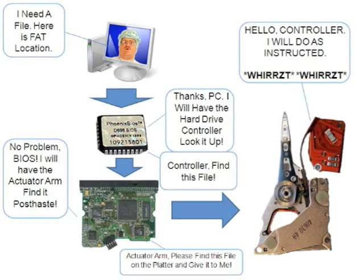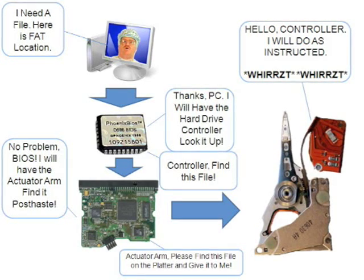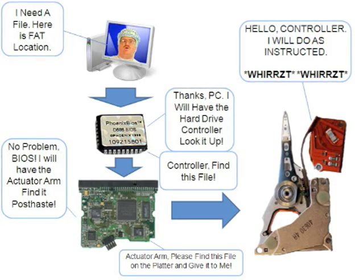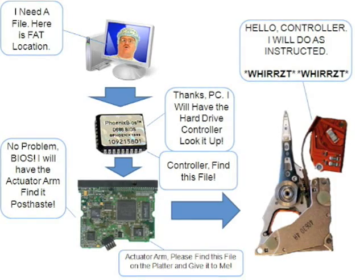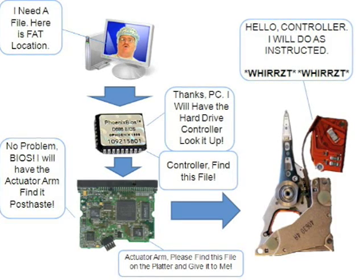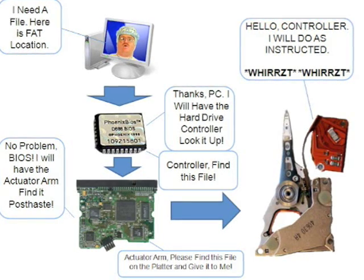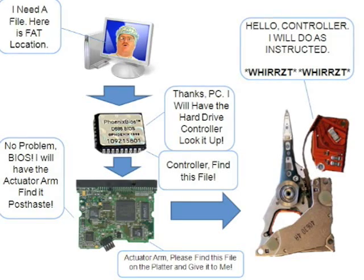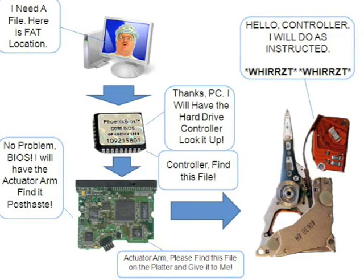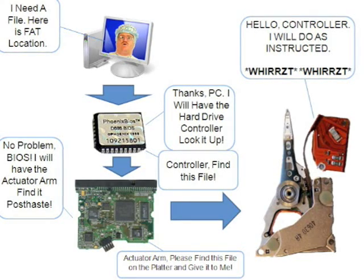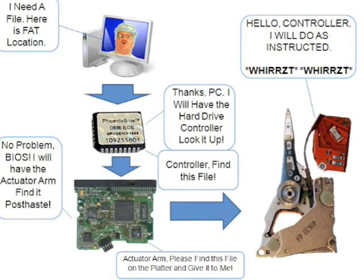Once it obtains the location, the location and retrieval request is passed to the computer's operating system — the BIOS. The BIOS, in return, asks the hard drive controller — the board on the back of the hard drive — to find the file needed based on the location listed in the FAT.